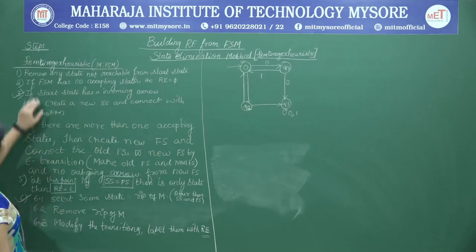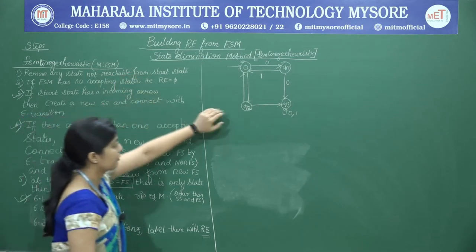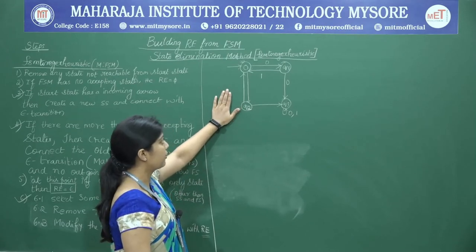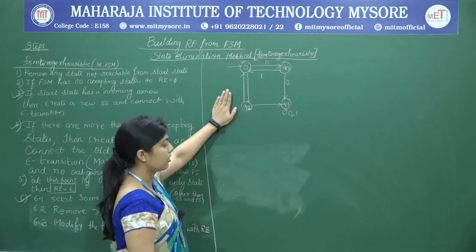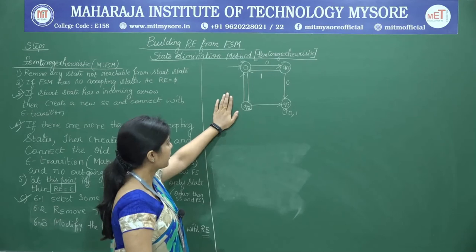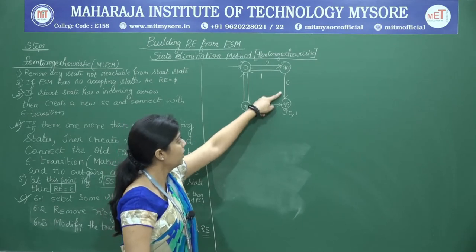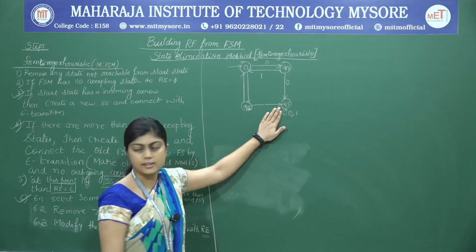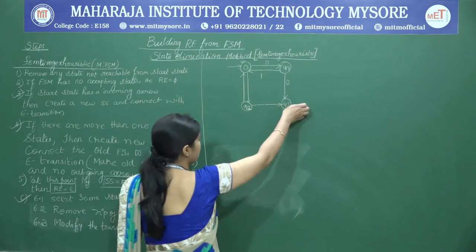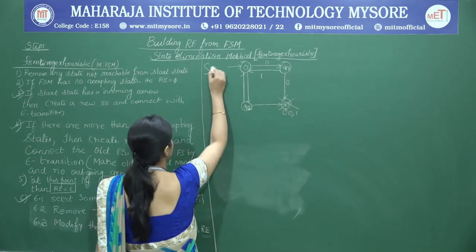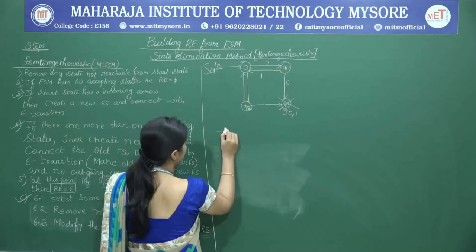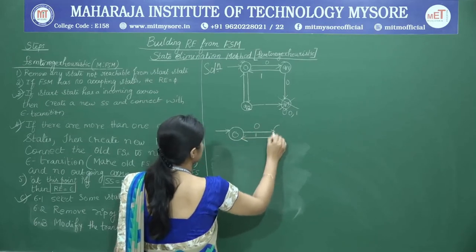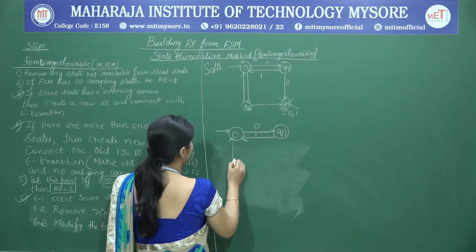Now we examine the first problem. Step 1: remove any state not reachable from the start state. We can see that Q3 has only incoming arrows and no outgoing arrows at all, so Q3 is a dead state. Therefore we eliminate Q3. All transitions connecting to Q3 and its own loop are eliminated from the problem.